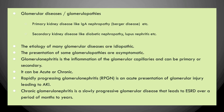Glomerulopathies can also be secondary in origin — meaning diseases of other systems affect the kidney. For example, diabetes is a multisystem disease that leads to diabetic nephropathy. Similarly, systemic lupus erythematosus, an autoimmune disease, leads to lupus nephritis when the kidneys are affected.